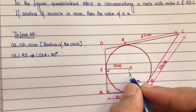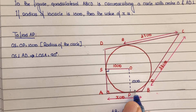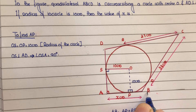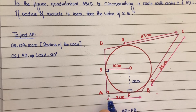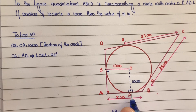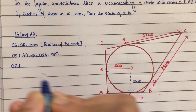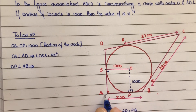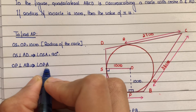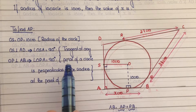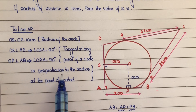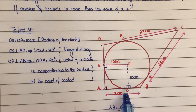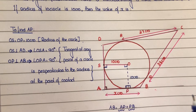Similarly, OP is the circle's radius and AB is tangent to the circle at point P. So OP is perpendicular to AB — same reason. Therefore angle OPA equals 90 degrees. Reason: tangent at any point of a circle is perpendicular to the radius at the point of contact. So all four angles — angle S, angle A, angle P, and angle O — are each 90 degrees.